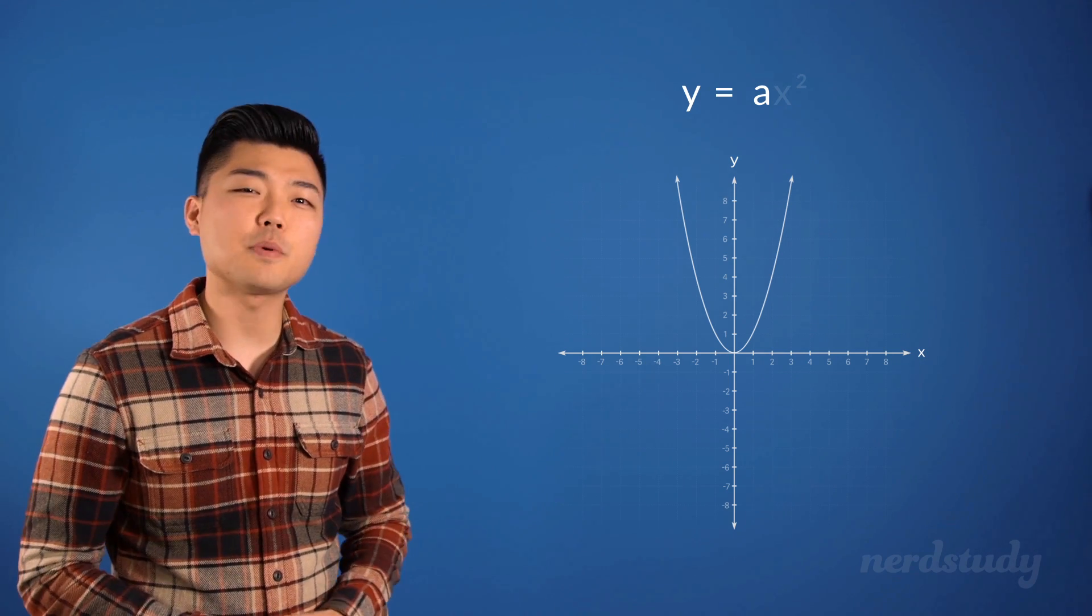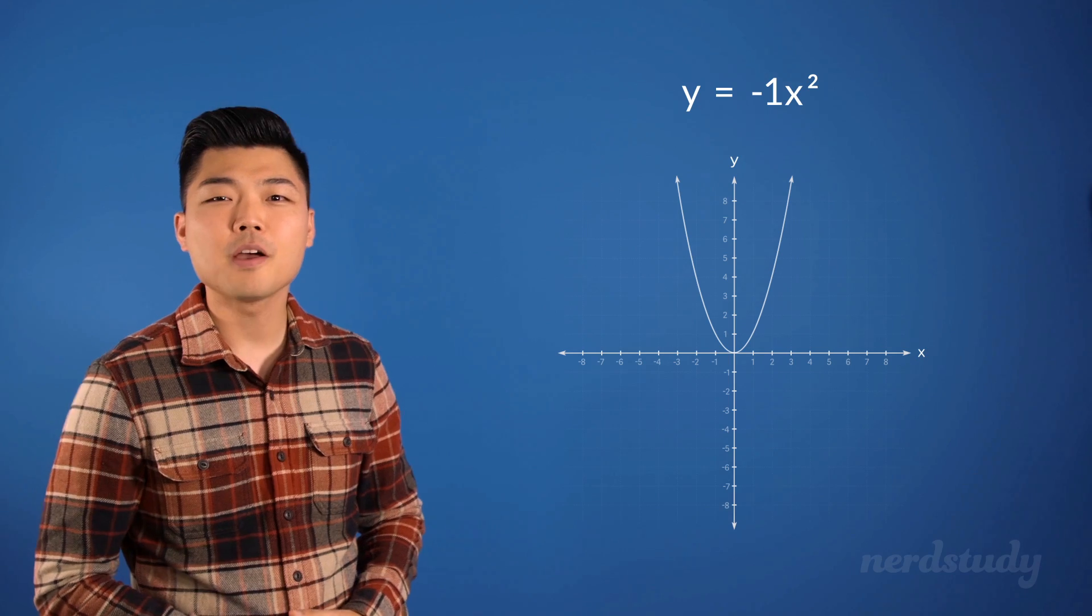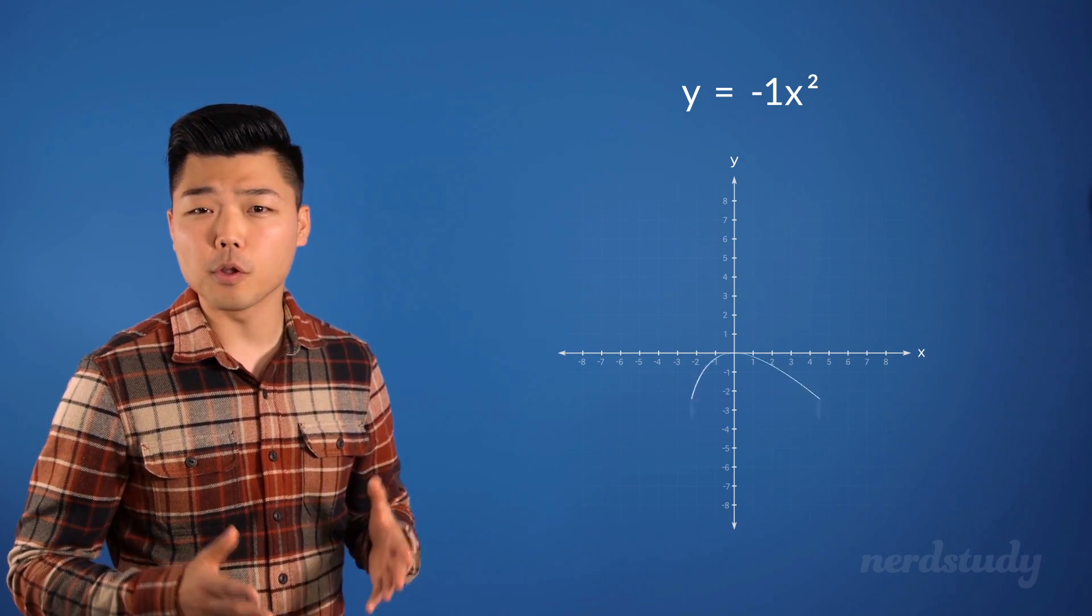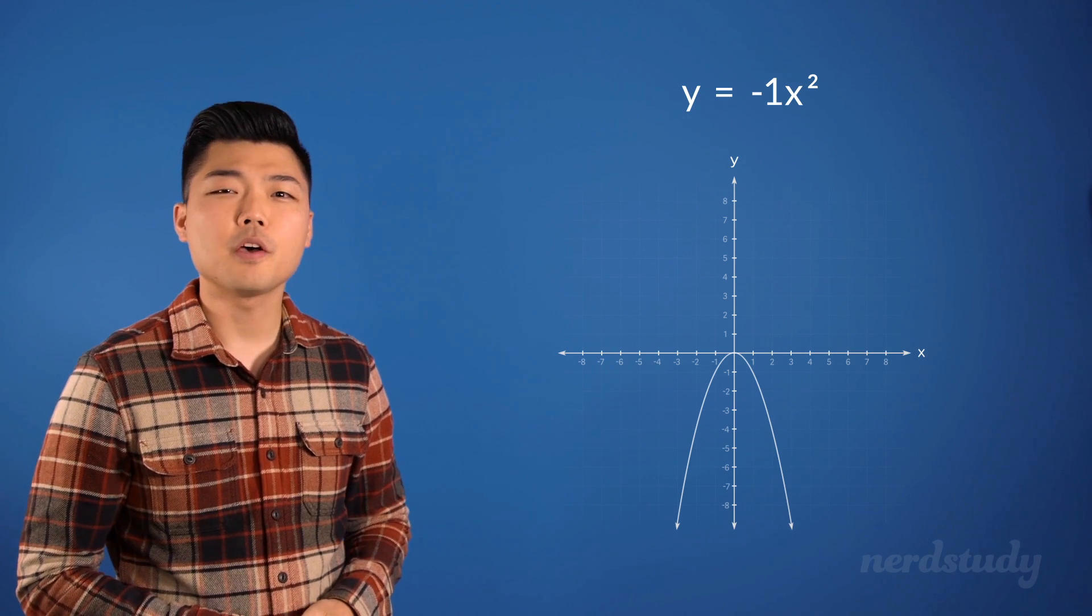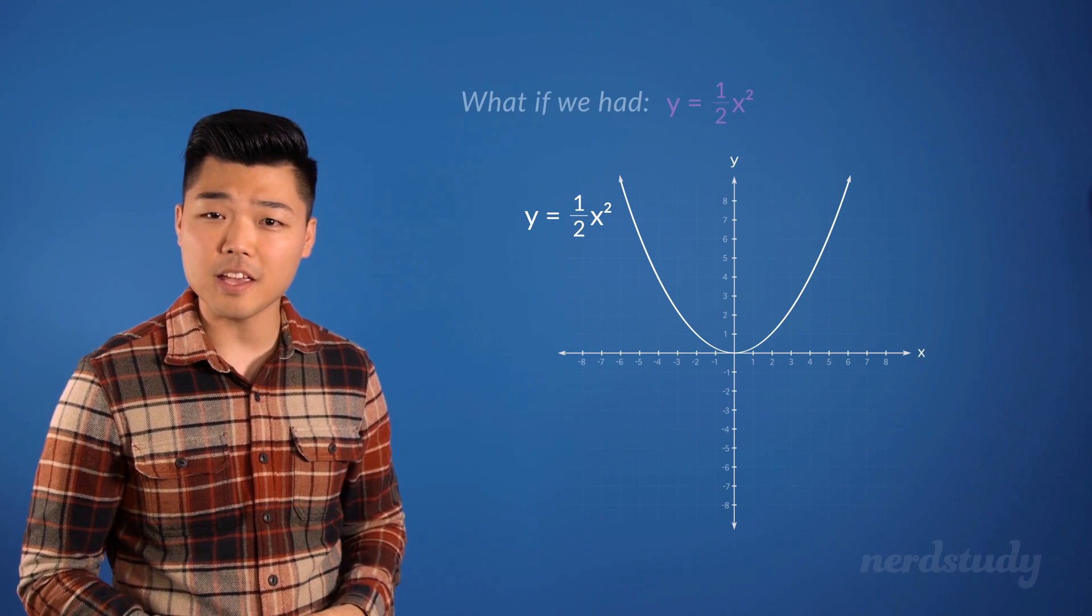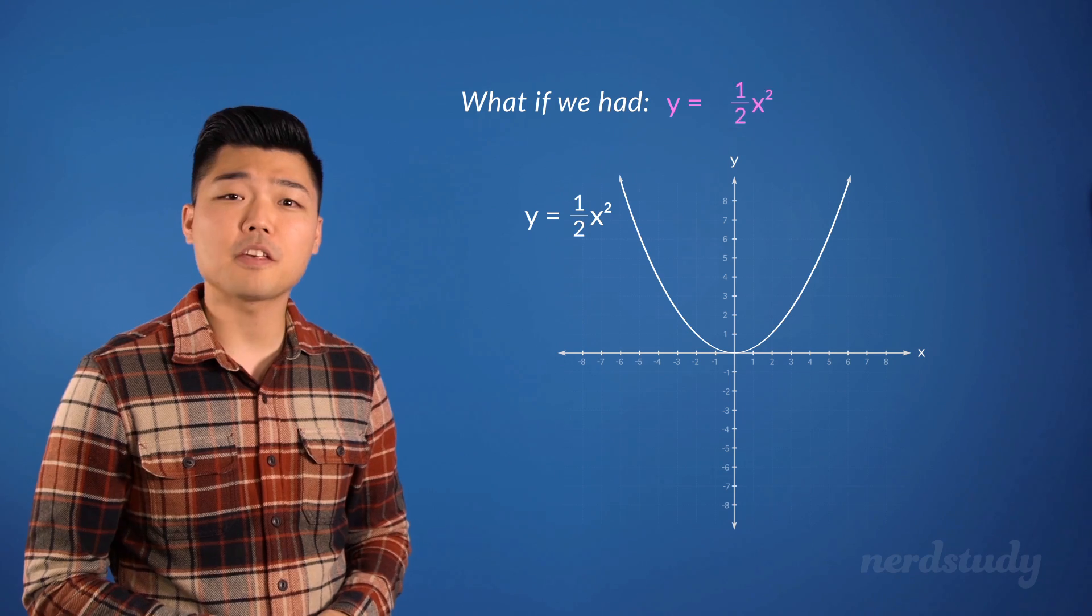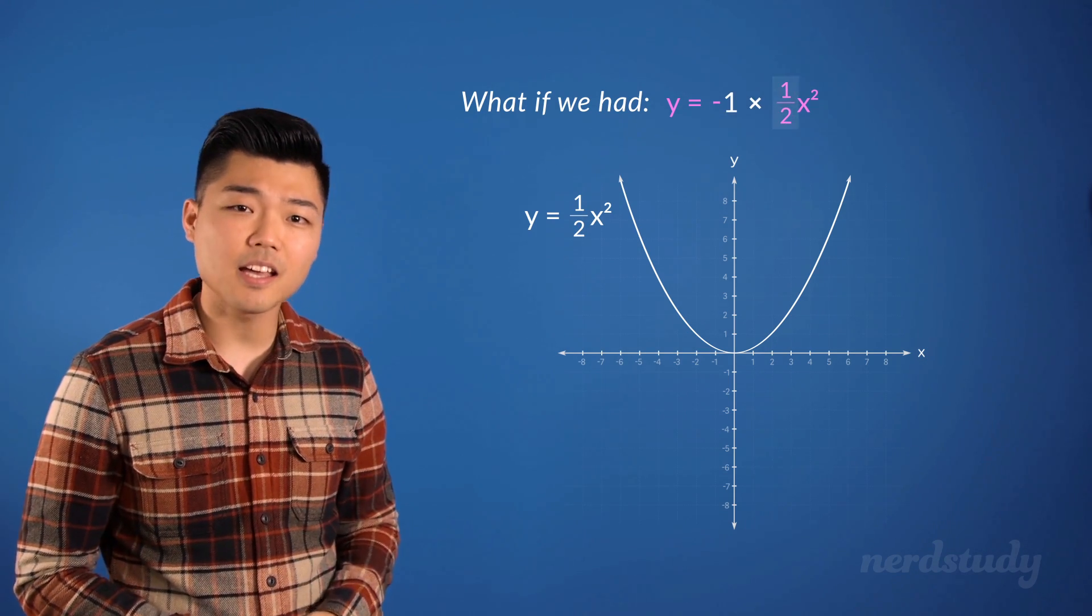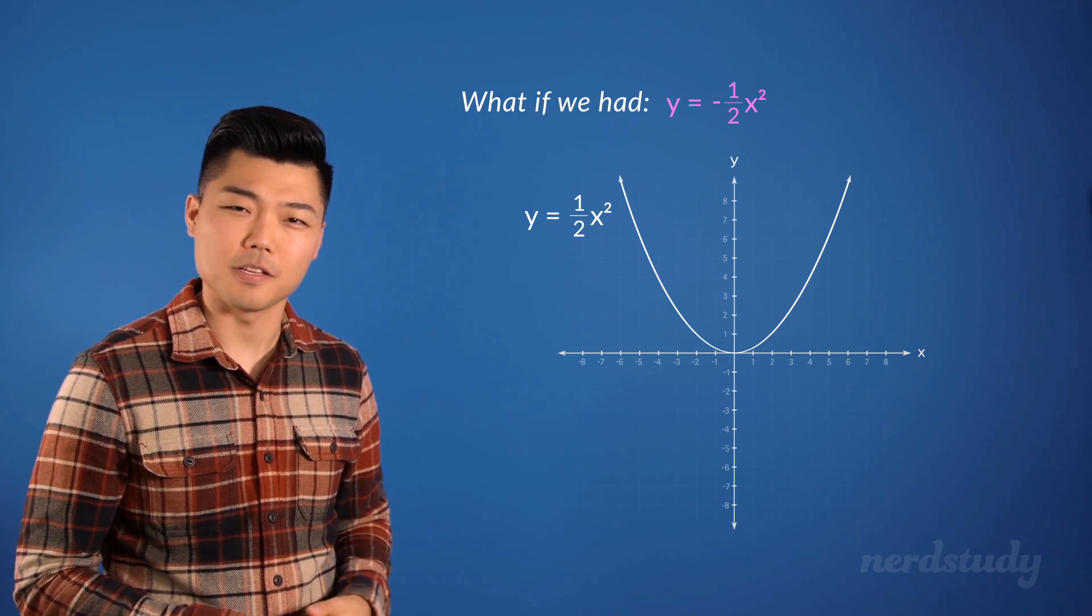If the a that is being multiplied with x squared is a negative number, then there will be a vertical reflection on the x-axis of the whole graph. So, for example, if we had a rather wide parabola with a positive a as such, and then we decided to multiply this with negative 1 making a a negative number, then what happens is this.